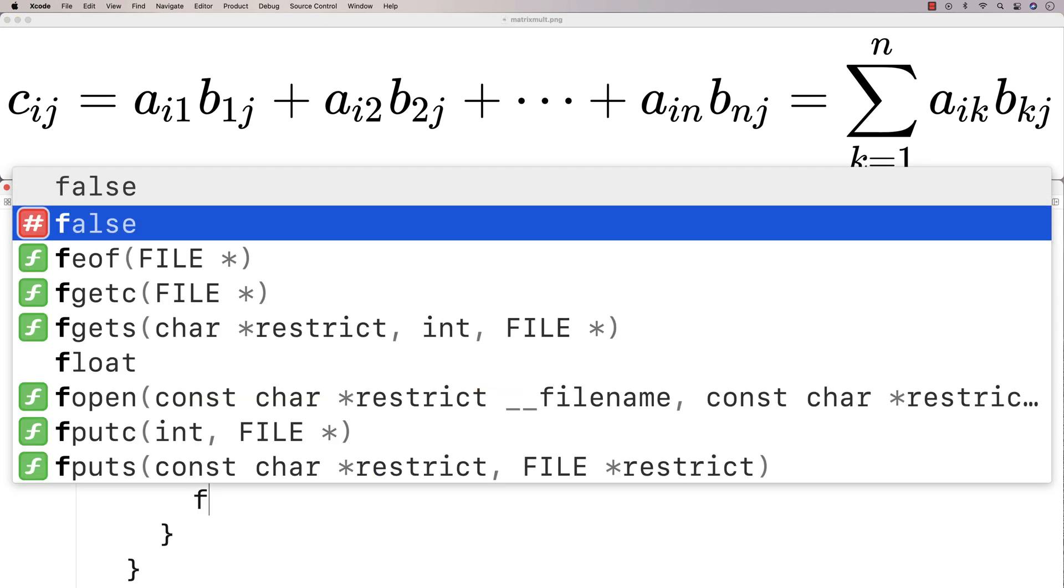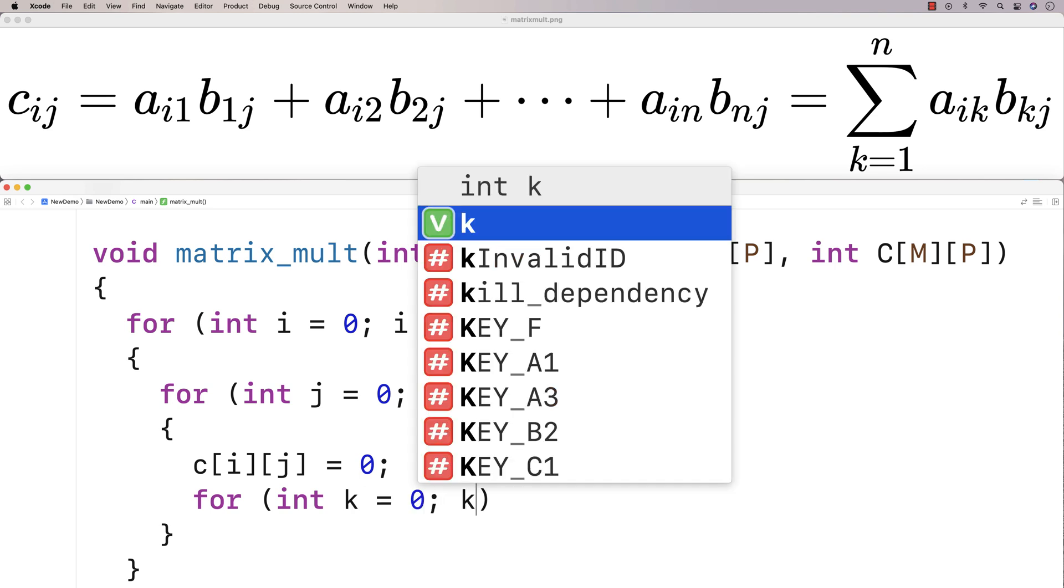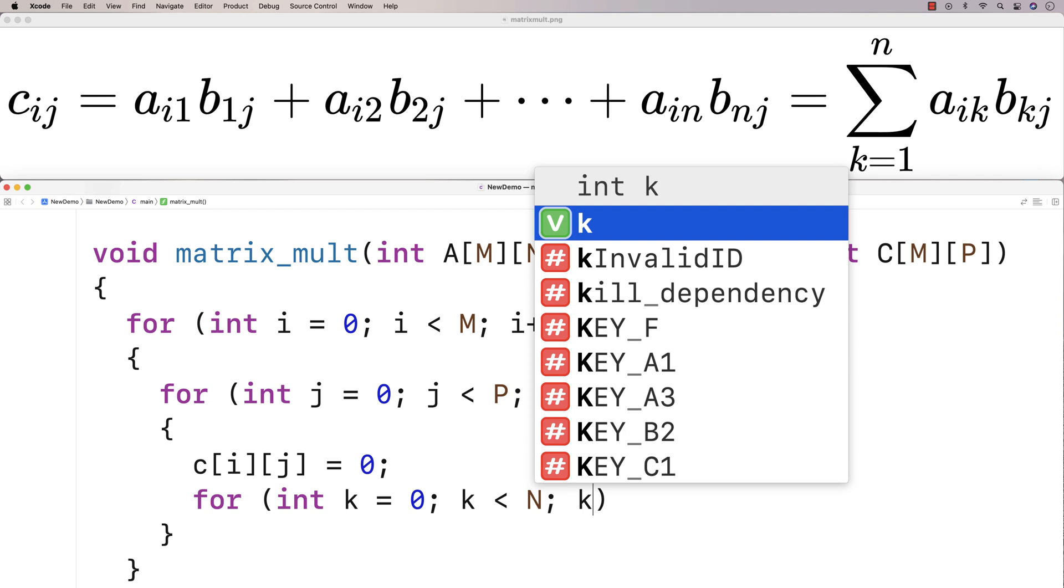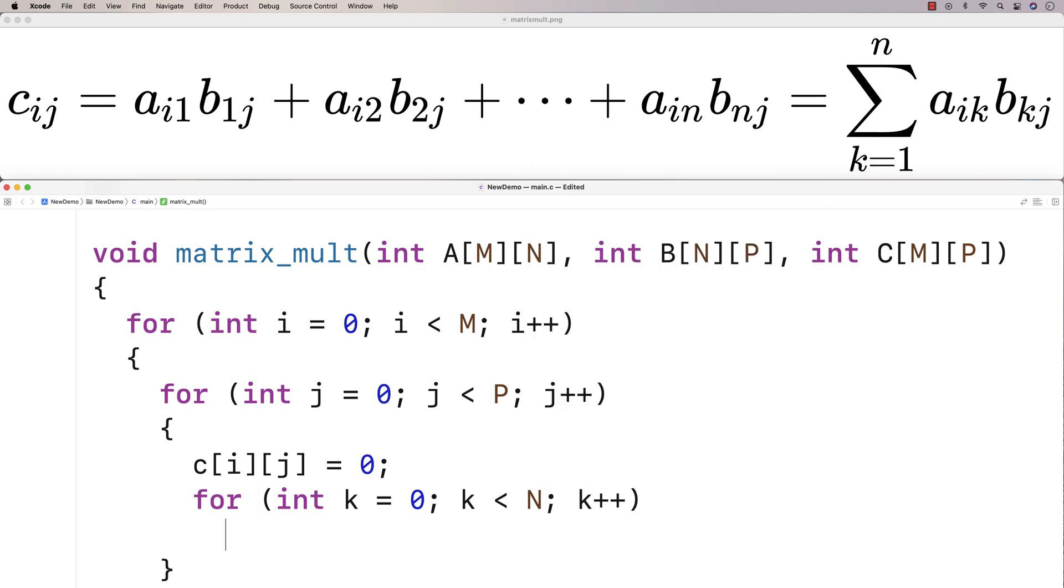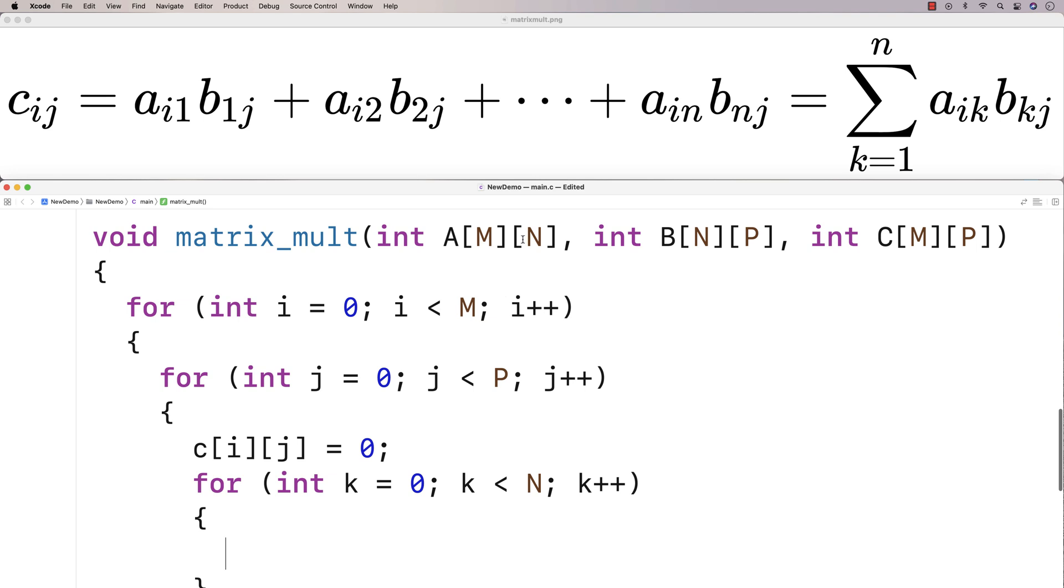So next we're going to have this inner loop and we'll take a counter variable k from 0 up until n incrementing by 1 each time. Now n is that common dimension of A and B. They both have this dimension n.